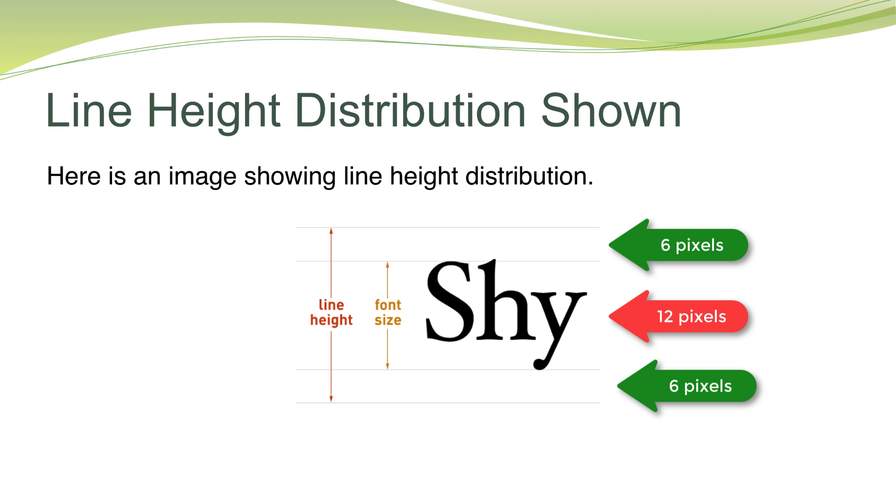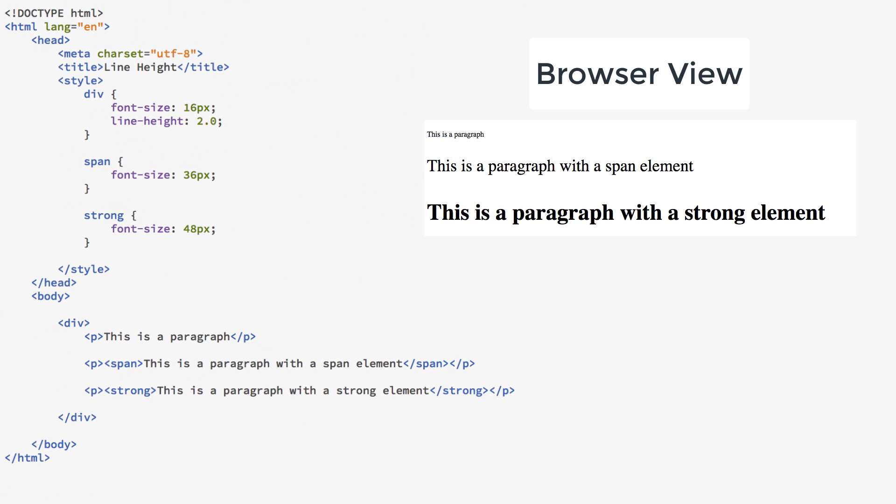Line height can be changed based upon whether or not you are using a unit. In this example, we have three paragraph elements. Two of the paragraph elements contain inline elements that have a different font size. All of the elements' line heights are inheriting the line height of 2 from the containing div. You can see that they all have different line heights because they have different font sizes and the line height has no unit.